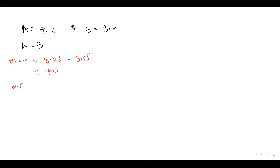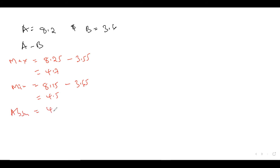The minimum value for this will be: you get the minimum of the first minus the maximum of the second. So minimum of the first is 8.15 minus 3.65, which gives 4.5. Then the absolute error, just like the other questions, would be maximum (4.7) minus minimum (4.5), then divided by 2. The answer is 0.1. That's the absolute error.